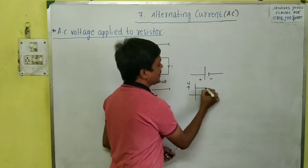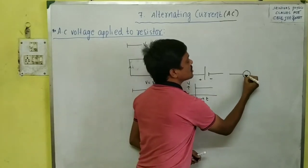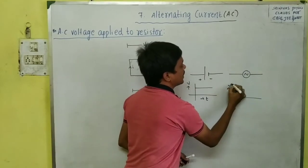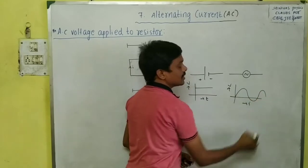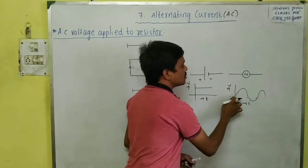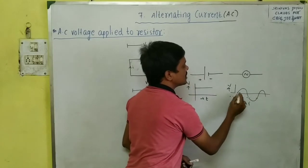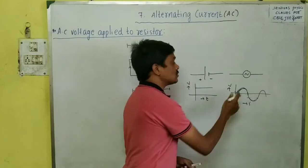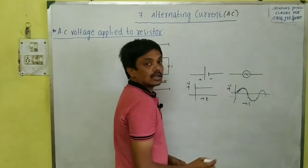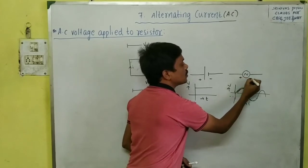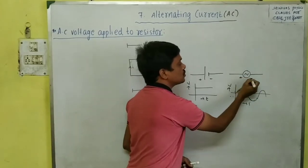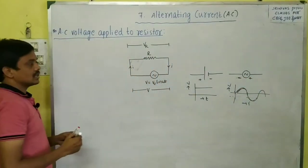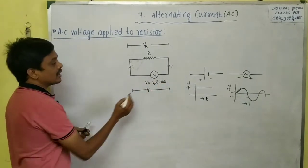For the DC source, if you draw the voltage versus time graph, you will get a straight line. For AC, the voltage changes with time — sometimes positive, sometimes negative — and the direction also changes. The terminals of the AC source change, so no fixed positive or negative terminal is assigned.